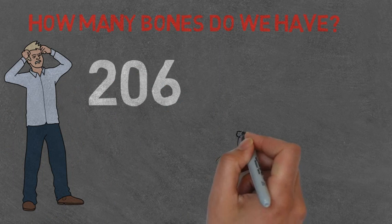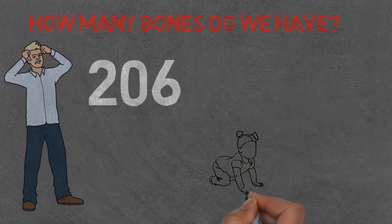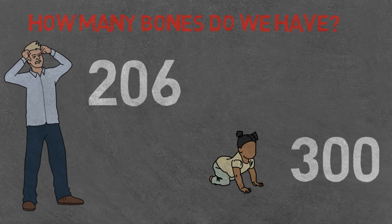At birth, you were born with 300 bones. I know you're probably thinking, how do we lose bones? Where are these bones going? Well, when you're born, there are many bones such as the skull that haven't fully developed yet.